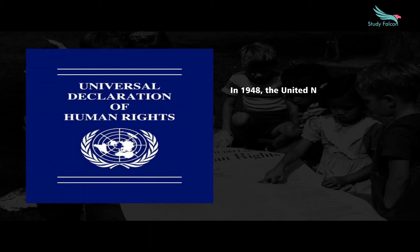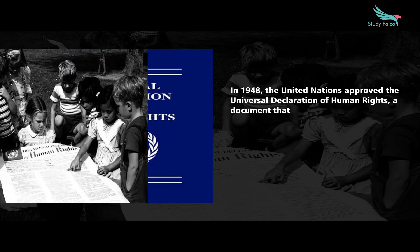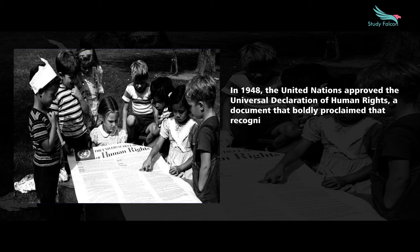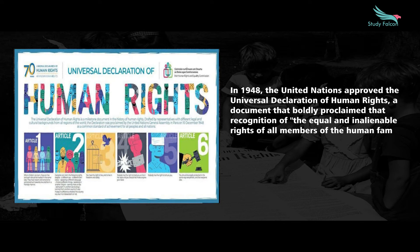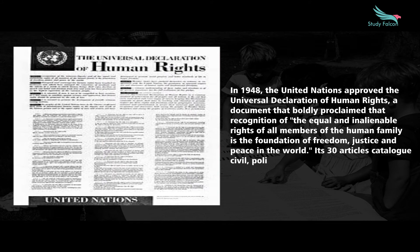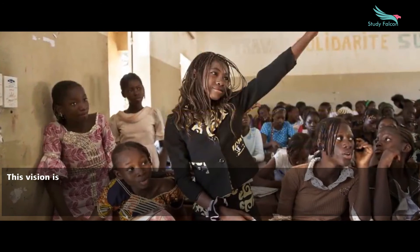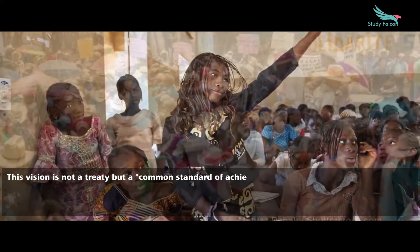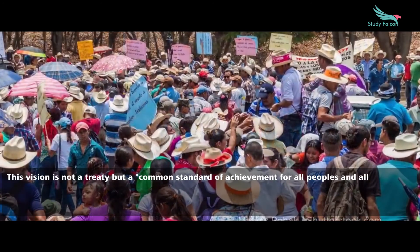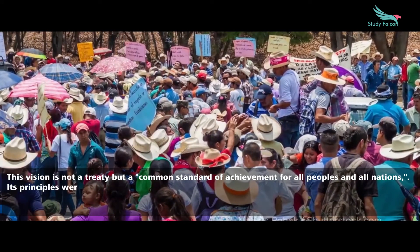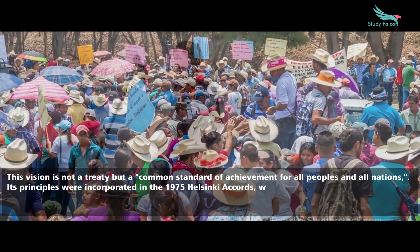In 1948, the United Nations approved the Universal Declaration of Human Rights, a document that boldly proclaimed that recognition of the equal and inalienable rights of all members of the human family is the foundation of freedom, justice, and peace in the world. Its 30 articles catalog civil, political, economic, and social rights. This vision is not a treaty but a common standard of achievement for all peoples and all nations.